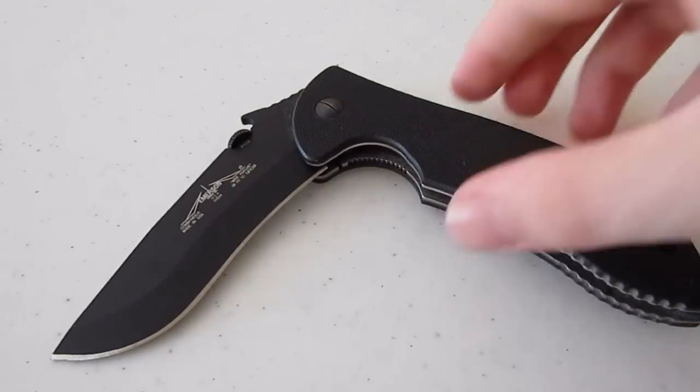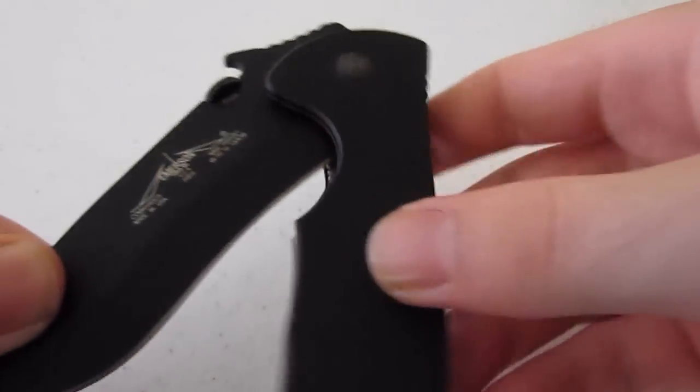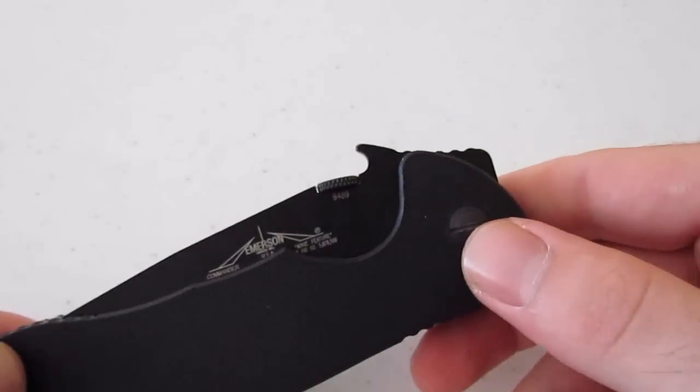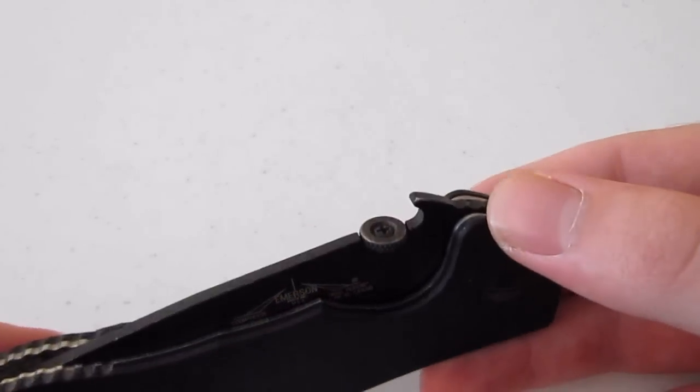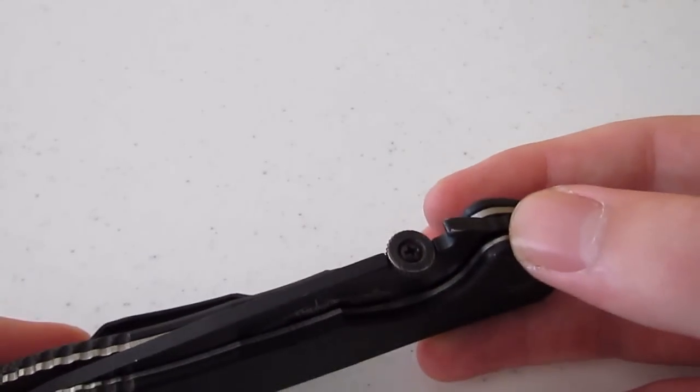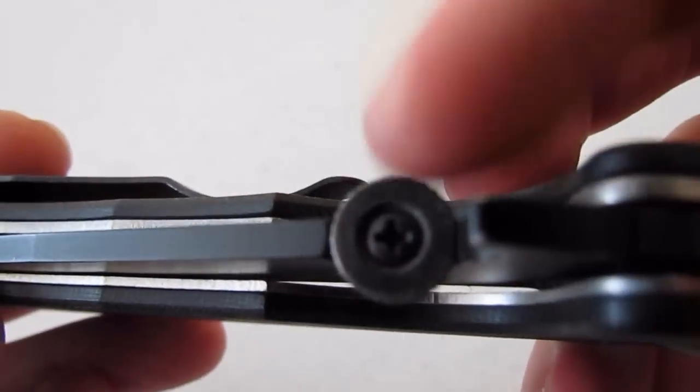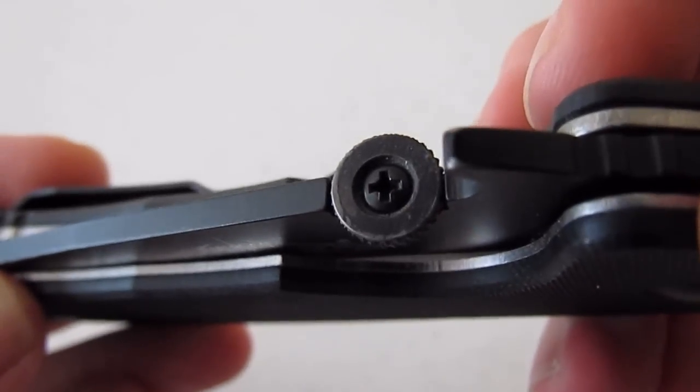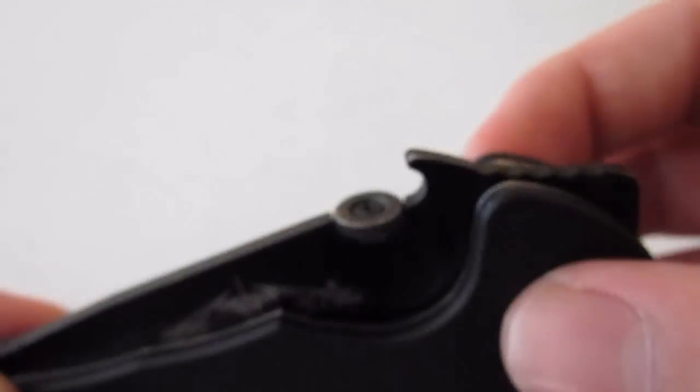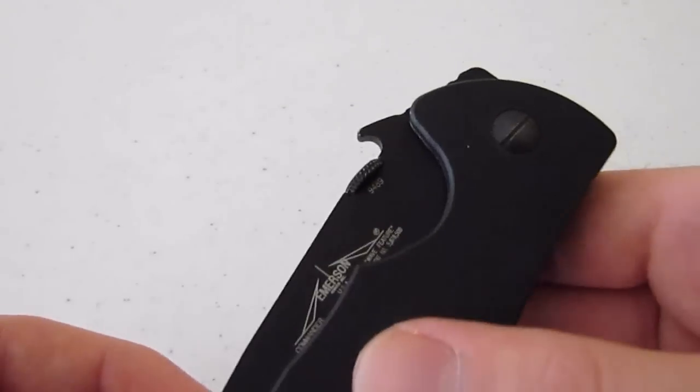This is another design that I somewhat stole and modified from Emerson. On Emerson's website, you can buy a replacement thumb disc. This is the thumb disc right here. It's what you use to open the knife. You can buy a replacement and what it is,